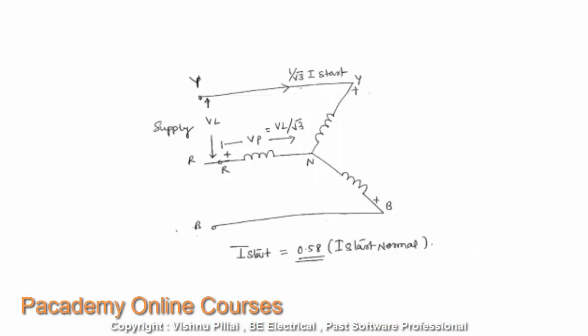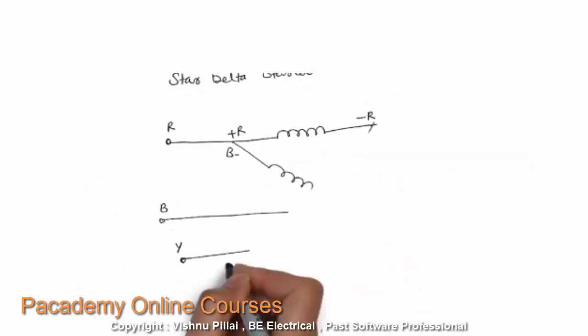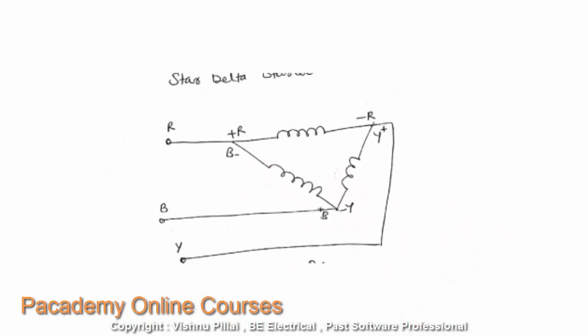Another starting arrangement is the star-delta starter. As shown here, the stator circuit is connected to the supply in star while starting. In a star connection, the phase-to-neutral voltage will be the line voltage divided by root 3, so it will be reduced by a factor of 0.58. The starting current, which is directly proportional to the supply voltage (V divided by impedance), will also be reduced by a factor of 0.58. While the motor is running, it is reconnected in delta, so the full line voltage applies across the phases, as you can see in the diagram. Only at the time of starting is there a reduction in starting current.